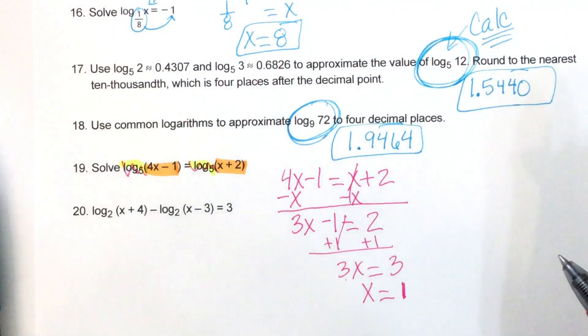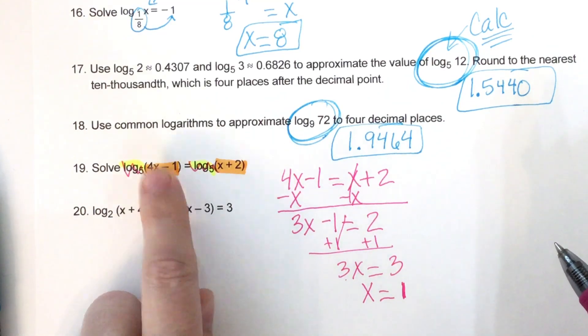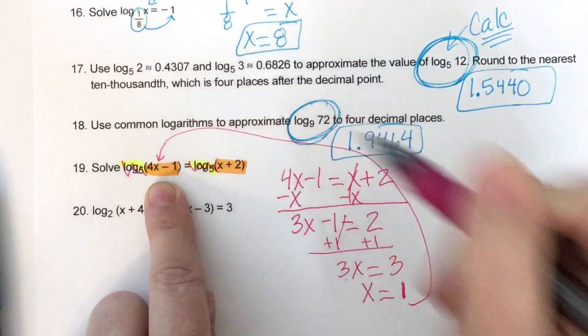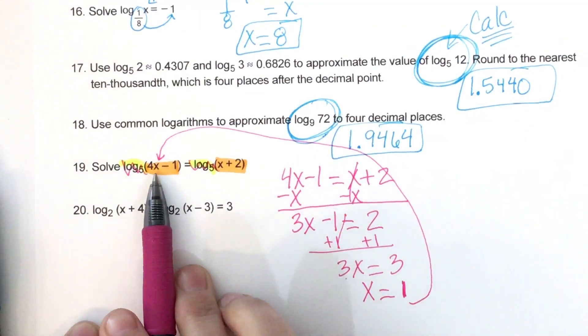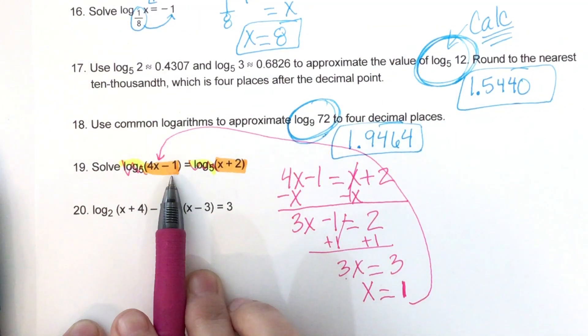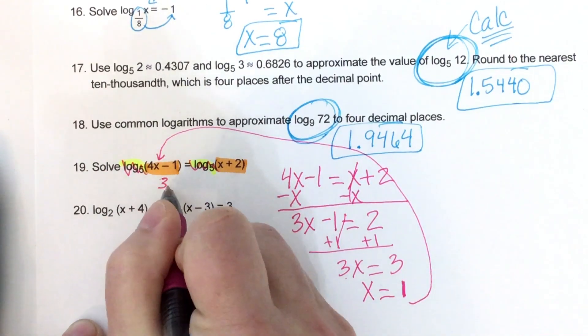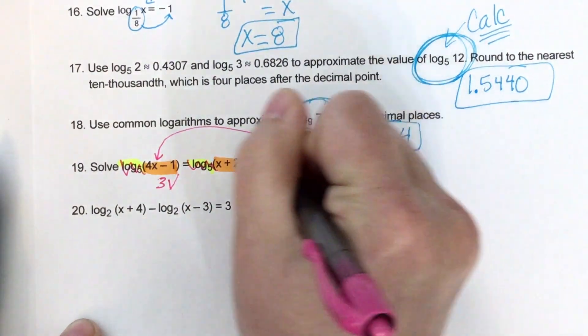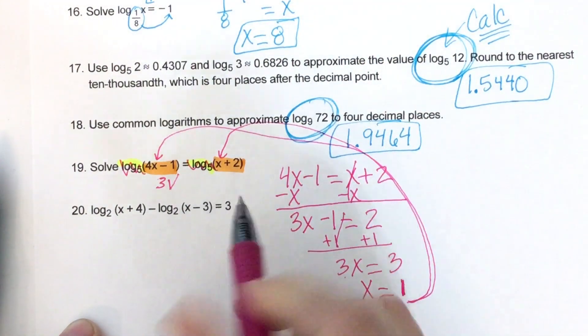Okay, the only thing I want to check out is to make sure that when I plug my 1 in, that I don't get 0 or anything negative. So 4 times 1 is 4. 4 minus 1 is 3. So this made a 3. And that's not 0 or less than. So that's good. And then I'm going to plug my 1 into this x also. And 1 plus 2 is 3.